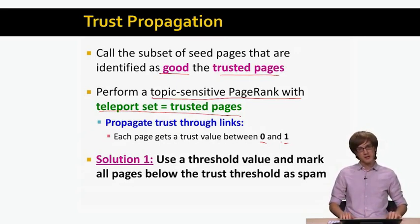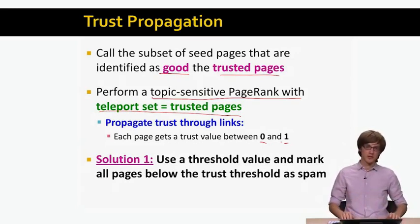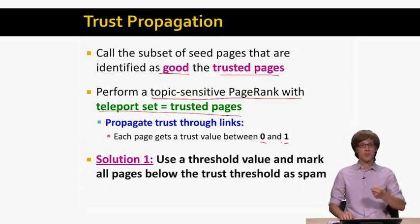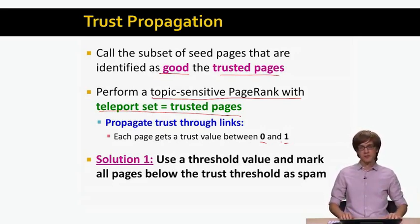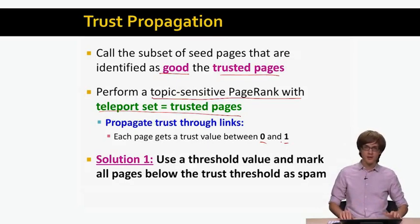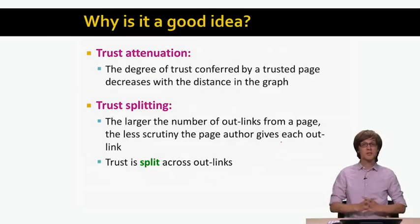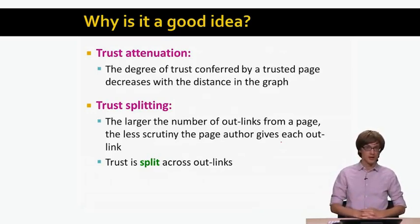The problem with this method is that we cut away all web pages with low PageRank scores with respect to the trusted set. A web page can have a low score because it is new and just been born, or because it is spam. So the question is: can we improve on this idea of using personalized PageRank from a trusted set to detect link spam?